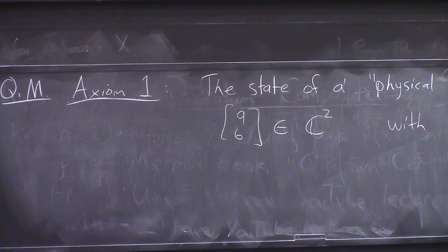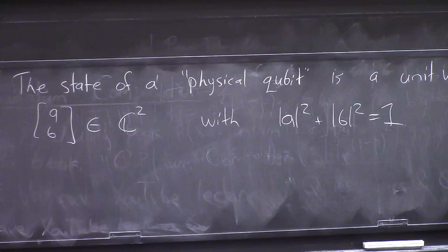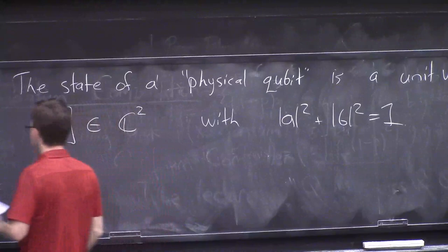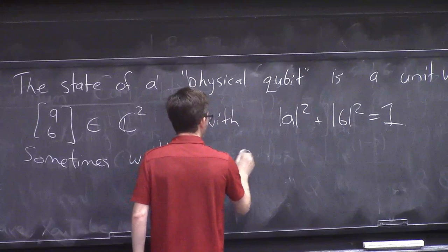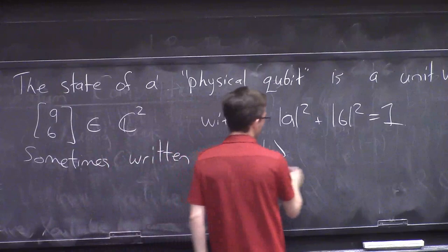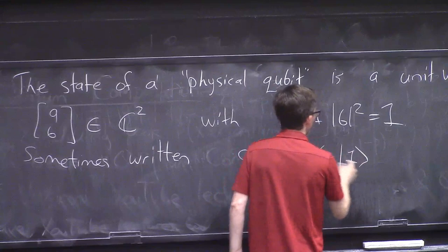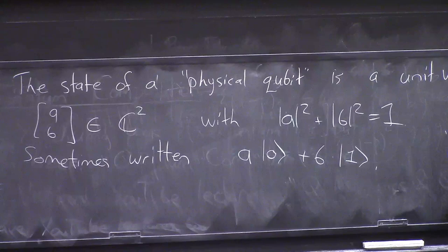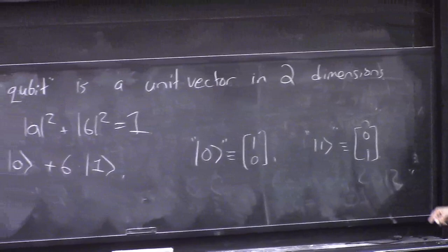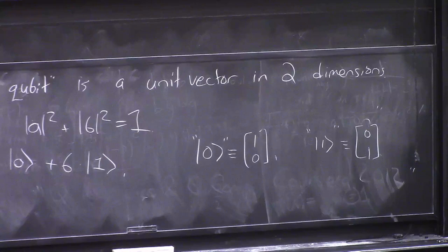When you see this state, it's sometimes written just as a vector (a, b). It's also sometimes written as a times |0⟩ plus b times |1⟩ — zero and one written in these asymmetric brackets, called kets. This is literally shorthand for the vector (1, 0) and (0, 1) respectively. A physicist invented this notation called Dirac notation. It's really awesome when you get to know it, though at first it's a bit annoying.